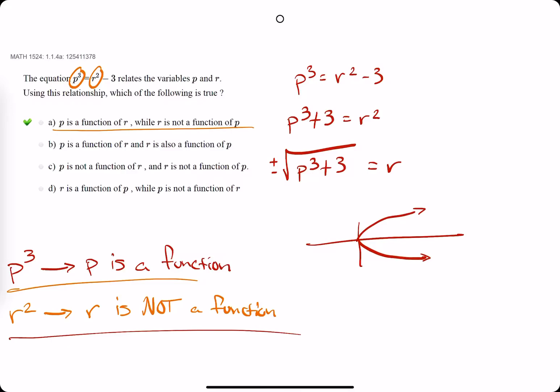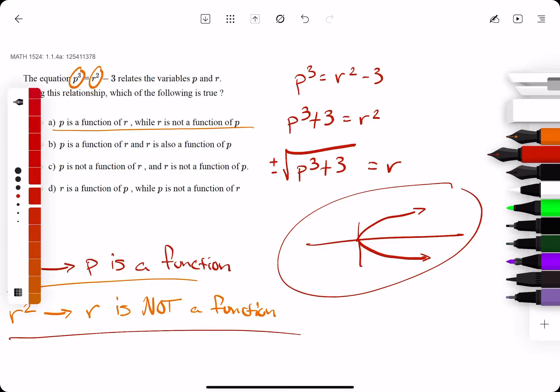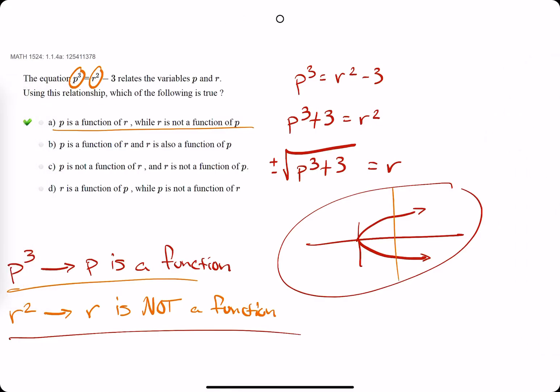but a graph like this would not be a function because, like we saw in the other problems, this would fail the vertical line test because you have at least two spots that are being crossed by the same vertical line.